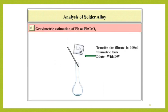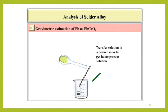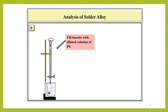Next is the part B, gravimetric estimation of lead as PbCrO4. For that, transfer the filtrate in 100 ml volumetric flask and then dilute it up to the mark by using distilled water. Now, transfer this solution in a beaker to get the homogeneous solution. Fill this diluted solution in a burette.